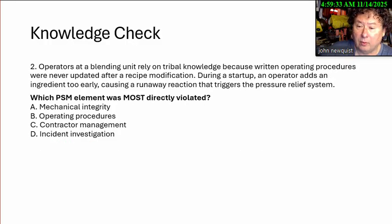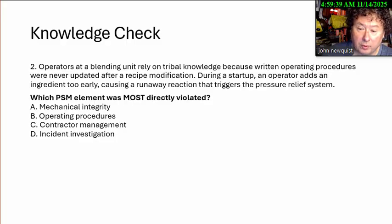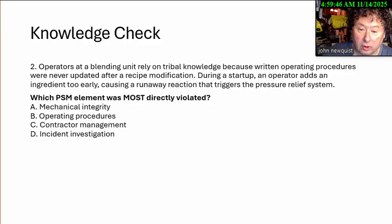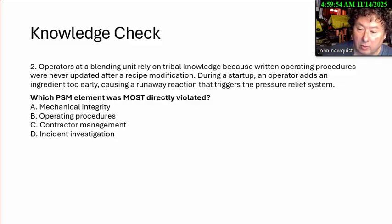Number two: an operator in a blending unit relies on tribal knowledge because written operating procedures were never updated after a recipe modification. During startup, an operator adds an ingredient too early, causing a runaway reaction that triggers the pressure relief system. Which PSM element was most strictly violated? A: Mechanical integrity. B: Operating procedures. C: Contract management. D: Incident investigation.